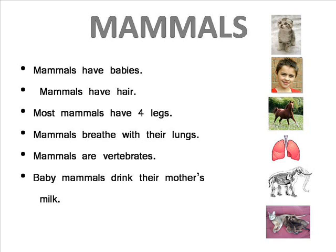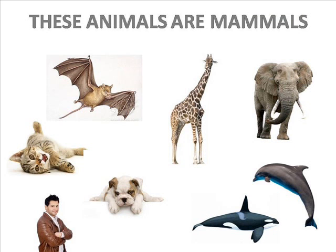Mammals. Mammals have babies. Mammals have hair. Most mammals have four legs. Mammals breathe with their lungs. Mammals are vertebrates. Baby mammals drink their mother's milk. These animals are mammals.